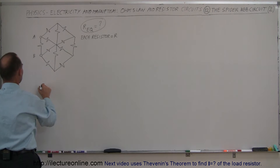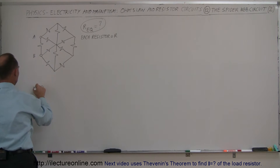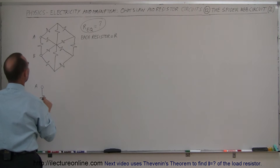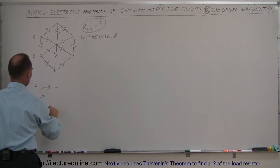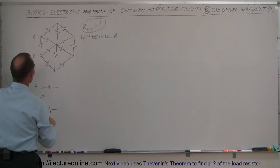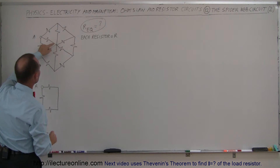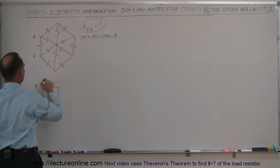Let's draw it like this. We have A and B. We have one resistor between them with value R. We have these two resistors — let's come straight out with these two. Then let's connect them this way with a simple connection, which is where they're connected here. Now I'm going to go up one.